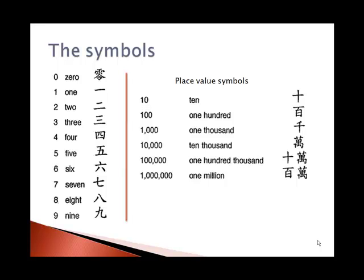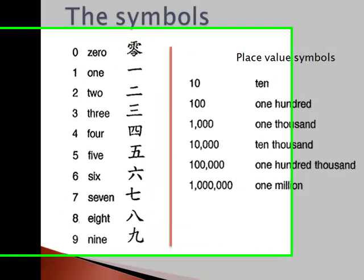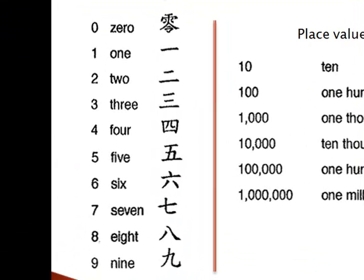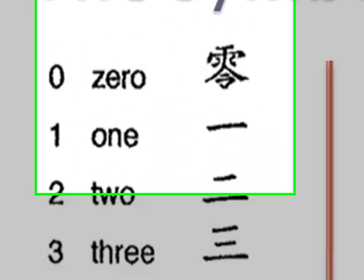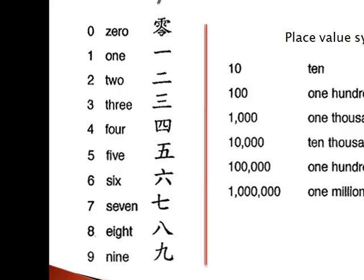The Chinese symbols for zero through nine are here on the left hand side. The zero symbol you can tell looks a lot more complicated than some of these others. In Chinese, one is Yi, two is Er, three is San.